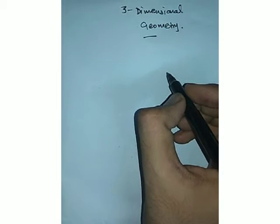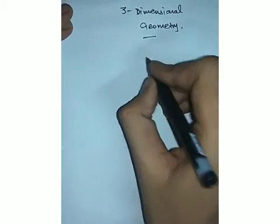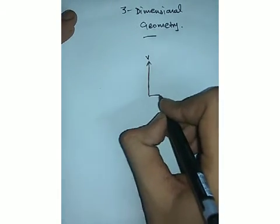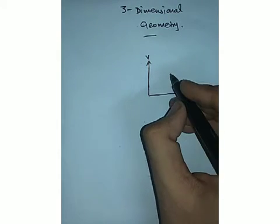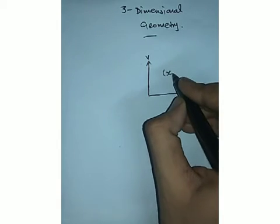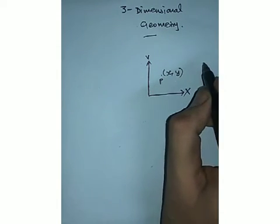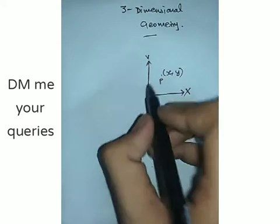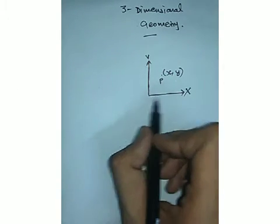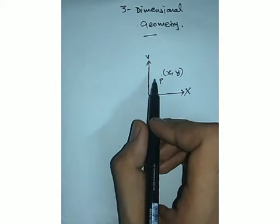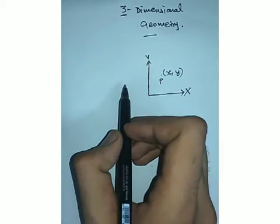Now, till 10th standard you have been studying the x-axis and y-axis. For example, this was your y-axis and this was your x-axis. Any point in the xy-plane is represented as (x, y). When we deal with shapes or coordinates of points lying in the xy-plane, the geometry formed is known as two-dimensional geometry, because there are only two dimensions included.